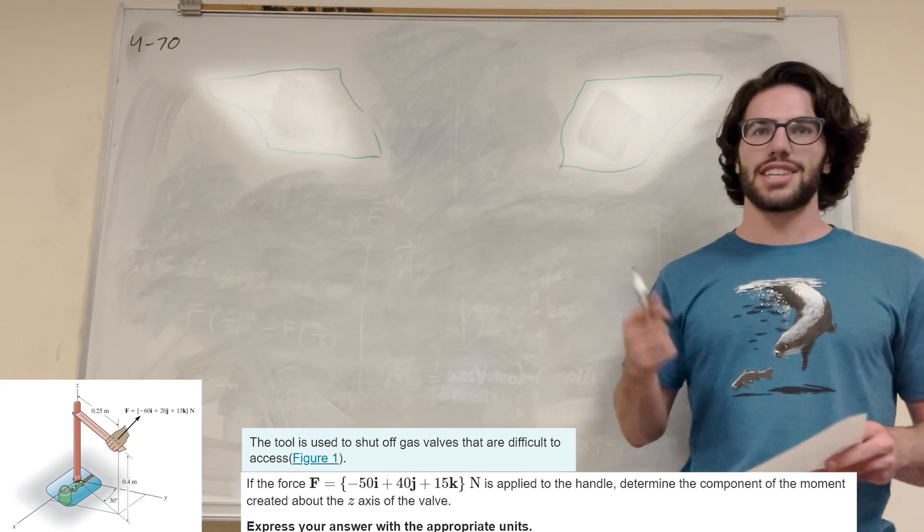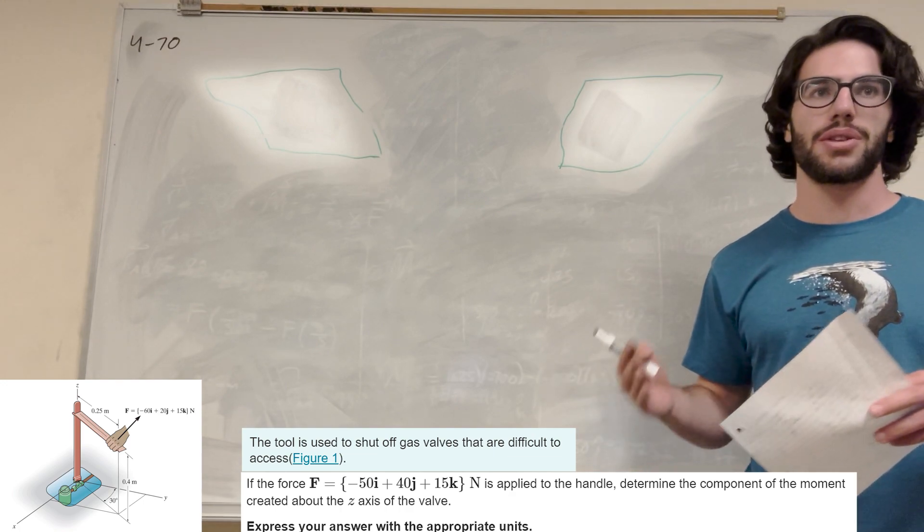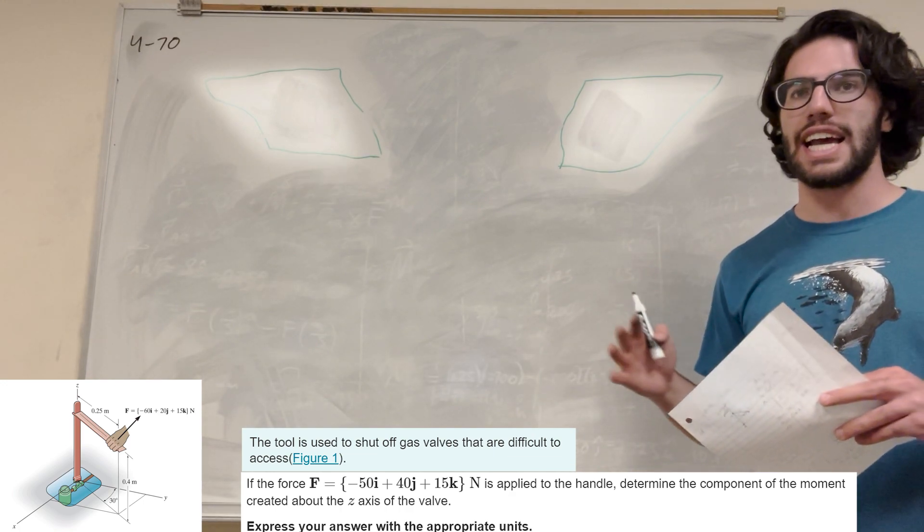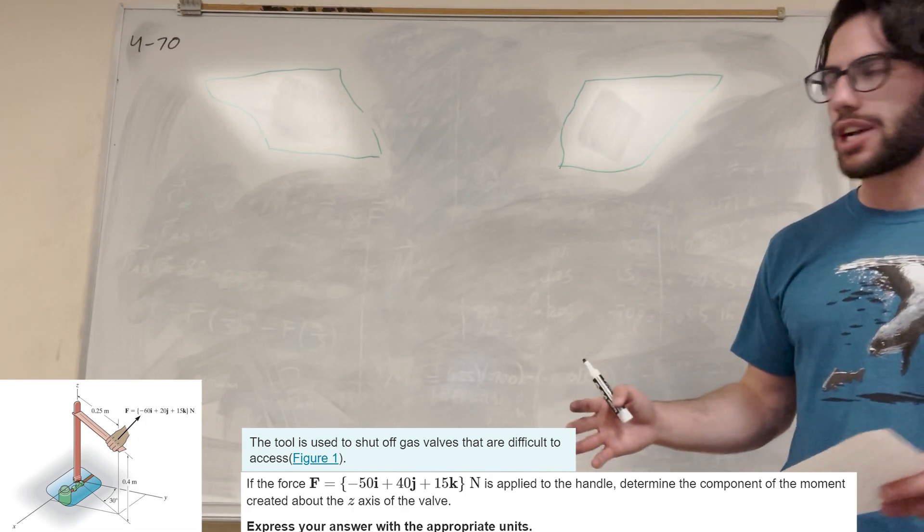So we've got this moment problem, but this time it's a moment around a certain axis. So this time we're finding the moment around the z-axis. So when we're finding the moment around the z-axis, what's that equation going to look like?